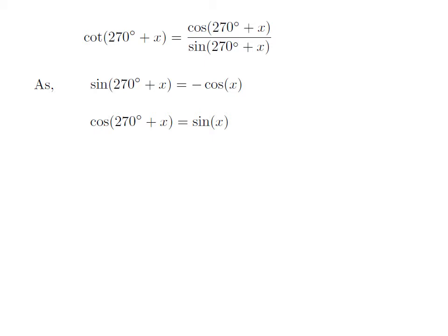We also know the trigonometry identity cosine of 270 degree plus x is equal to sine of x. The proof of this trigonometry identity has been explained in the video appearing in the upper right corner. The URL of the video has been mentioned in the description section as well.